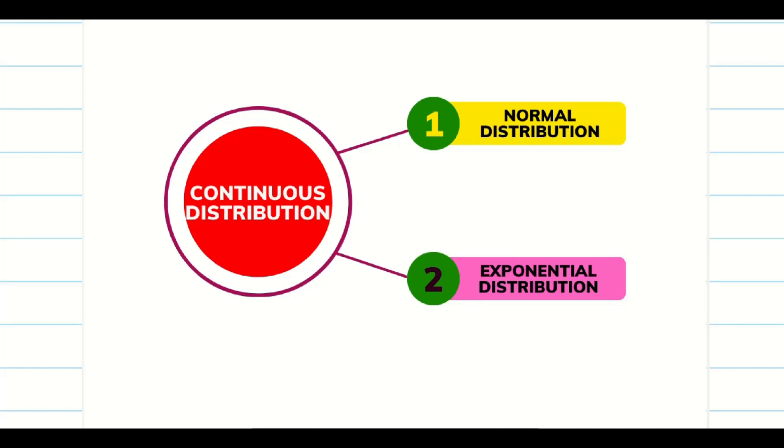We have seen binomial, we have seen Poisson and then geometric distribution. So now in the case of continuous distributions we are going to learn normal distribution, exponential distribution, uniform distribution, etc. So today our concern is on normal distribution. So let us see what is normal distribution and how it occurs and where is the origin.